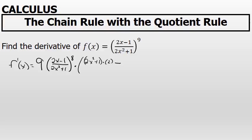The second term, or subtracted from the first term, is the numerator unchanged, which is 2x minus 1 in this problem, times the derivative of the denominator.